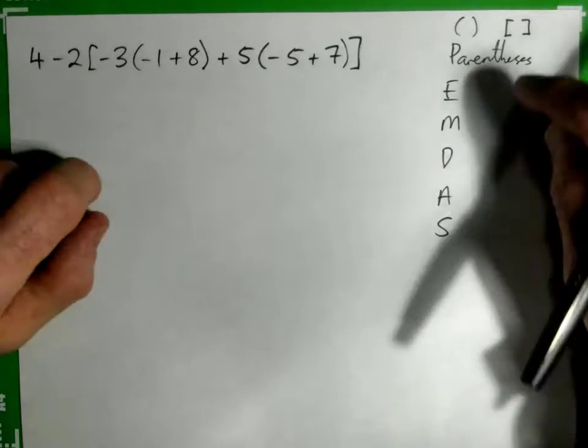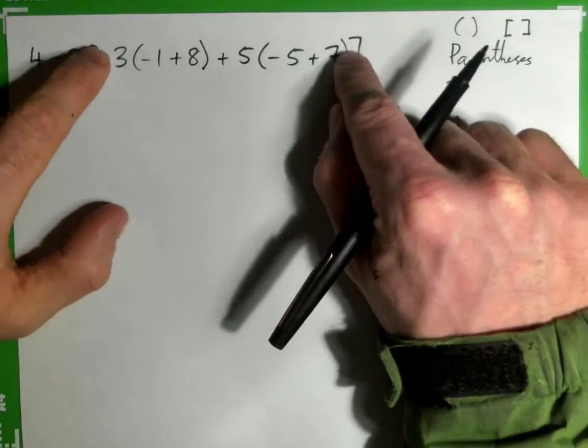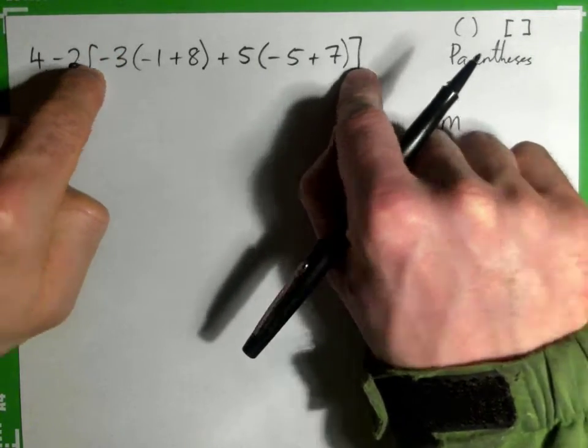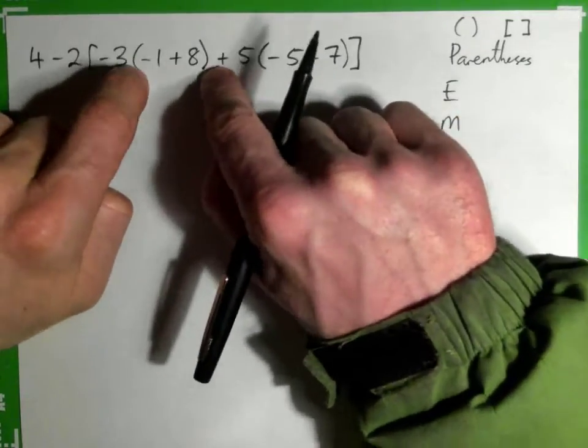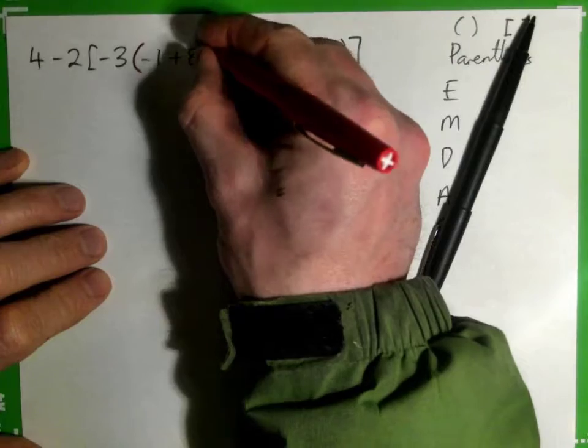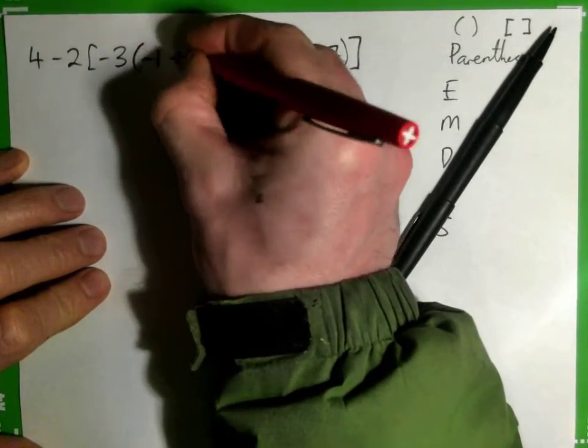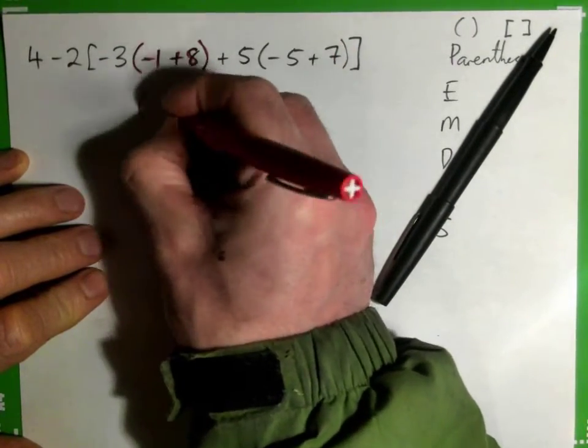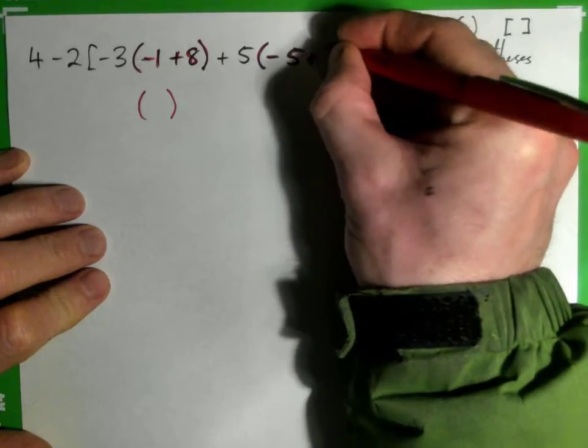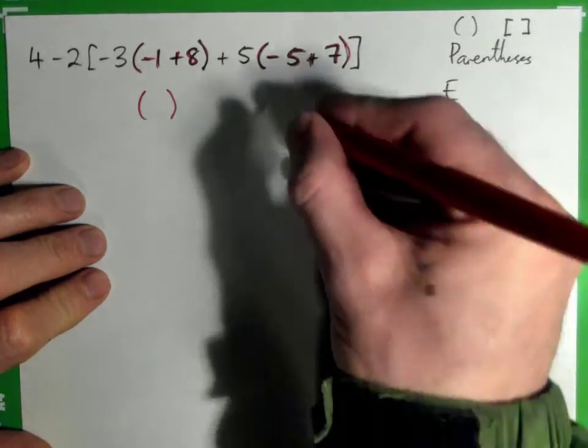And when we're doing the order of operations, we go inside. This is like the outermost parentheses, and then inside here we have inner parentheses, this and this. So we do the innermost ones first. So in other words, the first thing we need to deal with is this negative 1 plus 8, figure what that is, and then figure out what negative 5 plus 7 is. So that's the first thing to do with our order of operations.